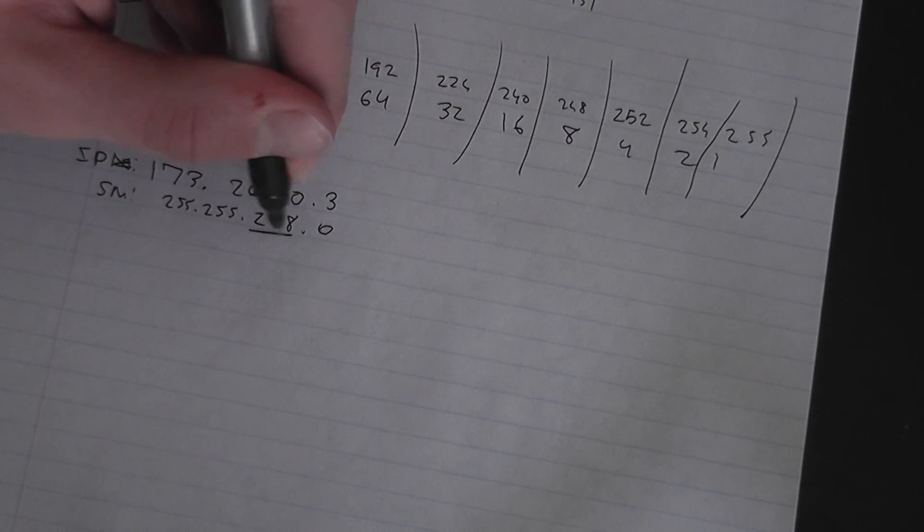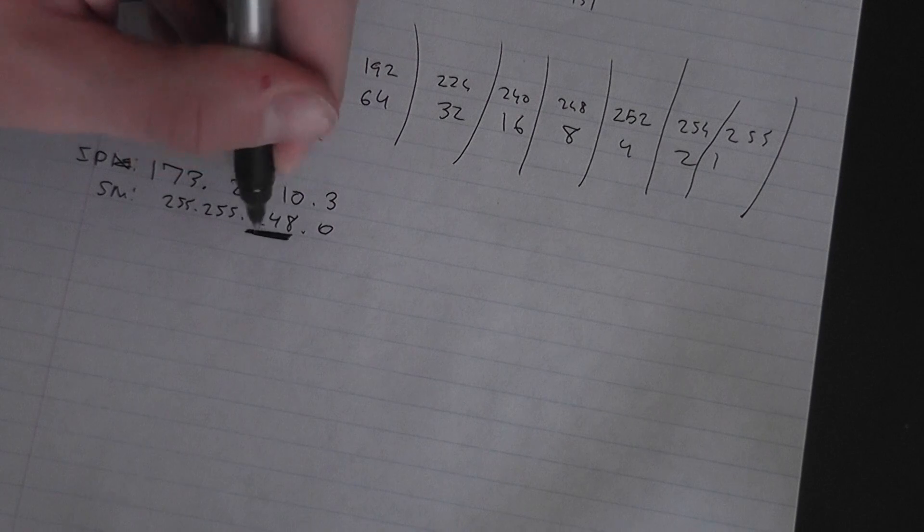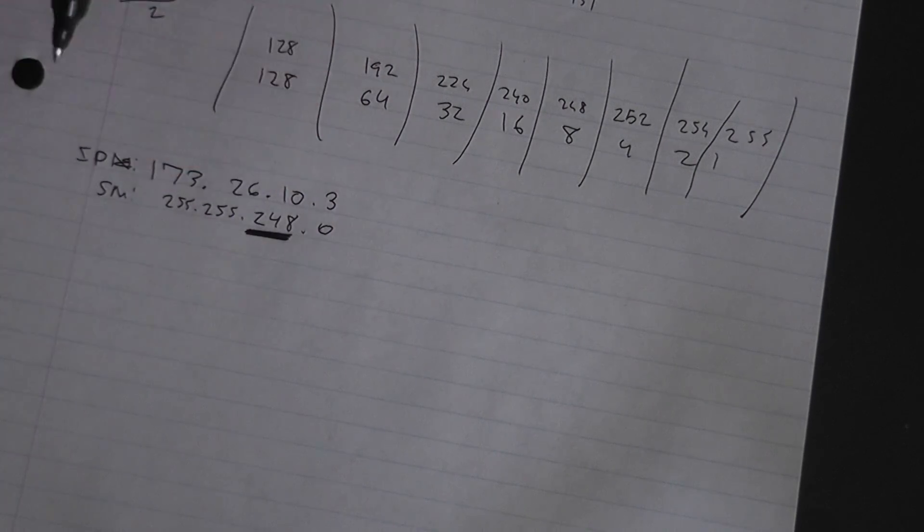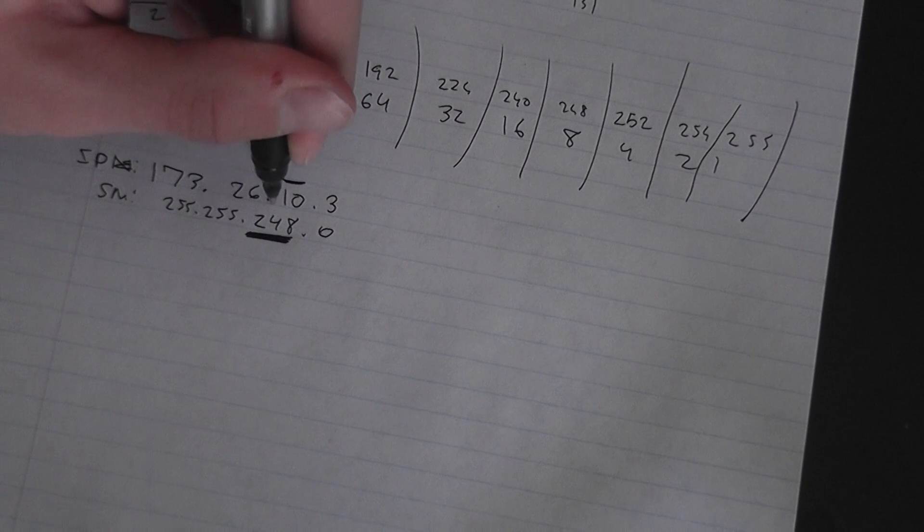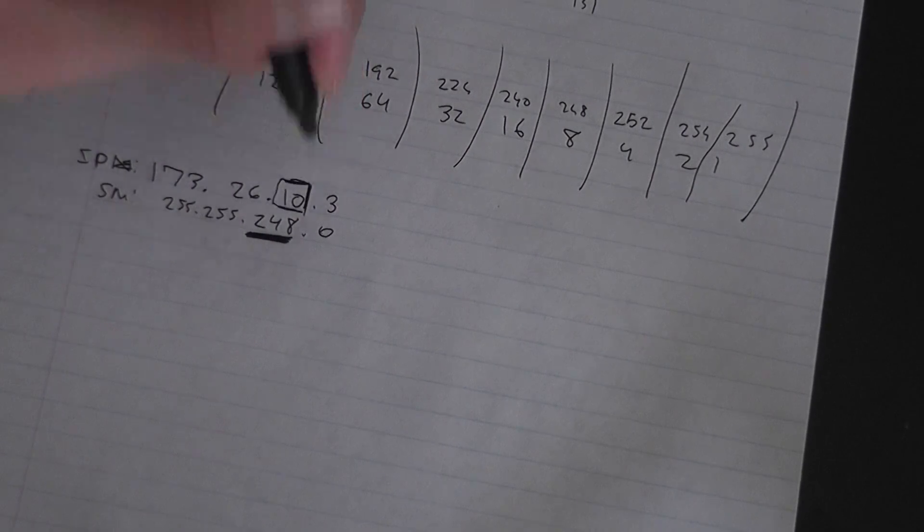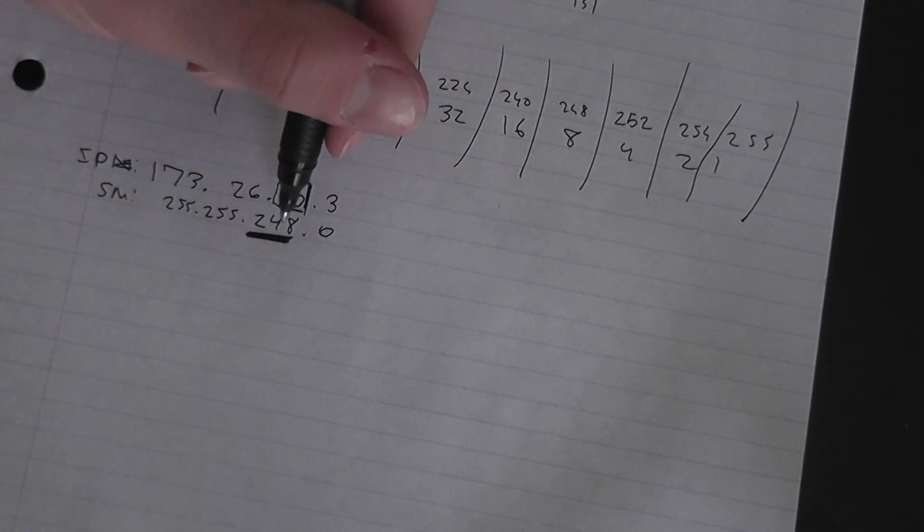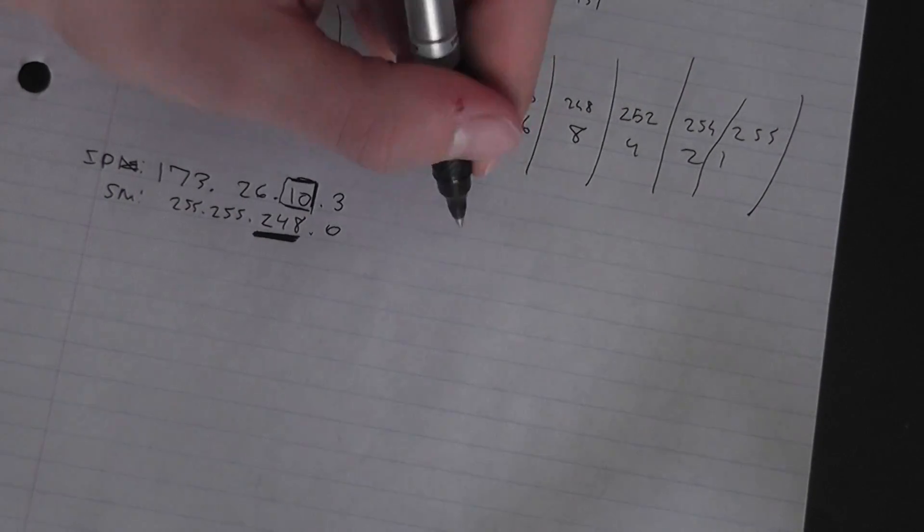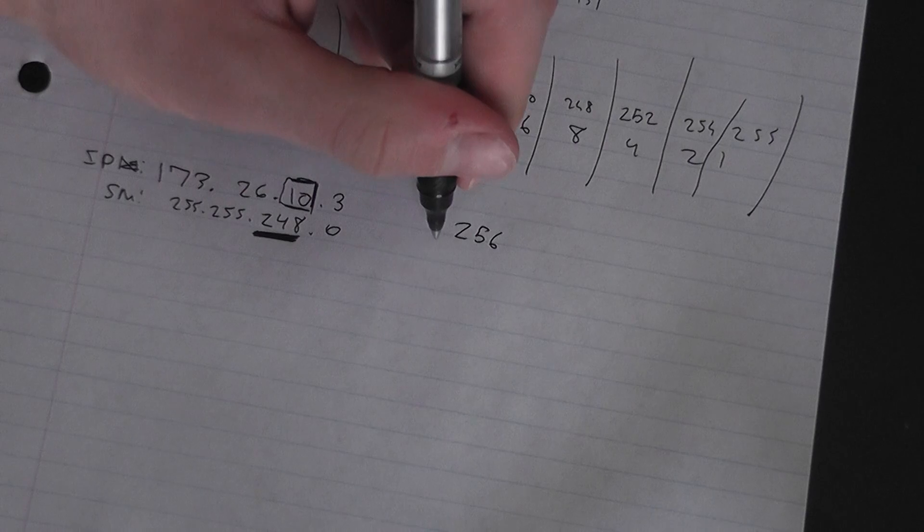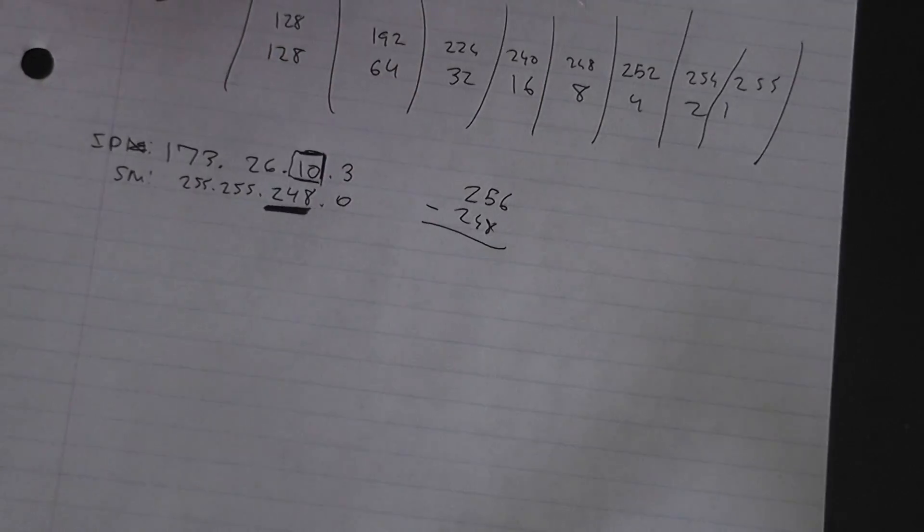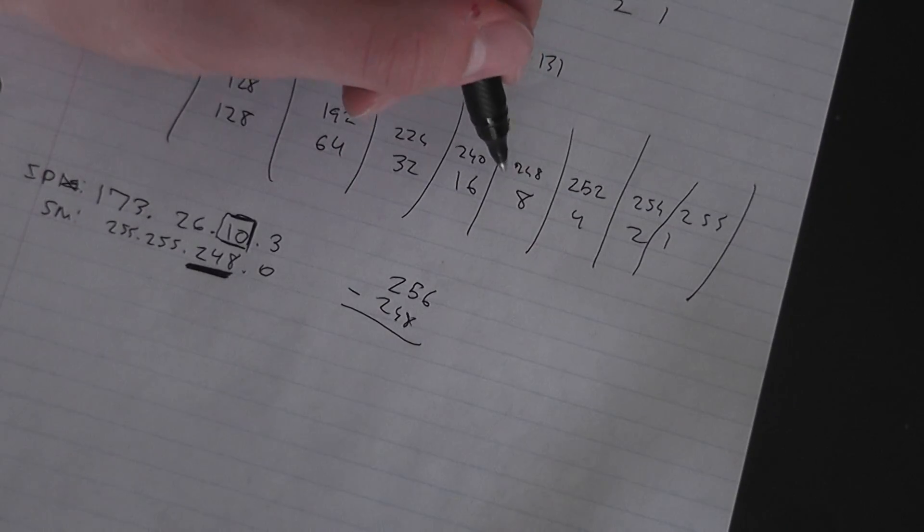The weird number is 248. That's the weird number in the third octet, so you would focus on the third octet in the IP address. A way to find your increments is you need to do 256 - that's like a magic number - minus 248, which equals 8.